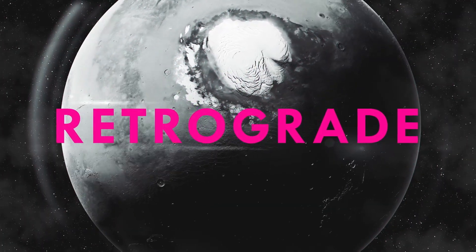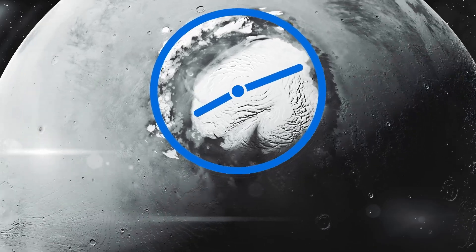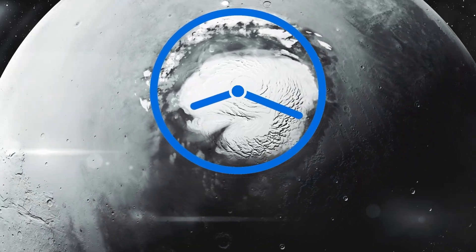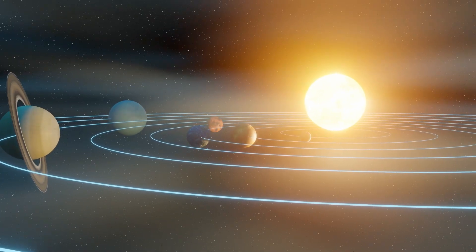On the other hand, simply put, retrograde is the complete opposite when a planet moves in a clockwise rotation. However, the picture is slightly more convoluted than this. Most planets in our solar system also have a slight tilt to their axis of rotation.